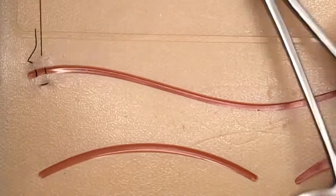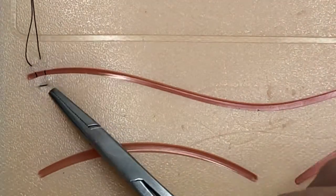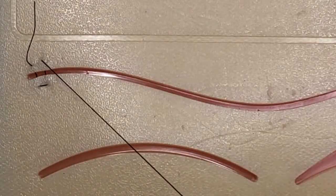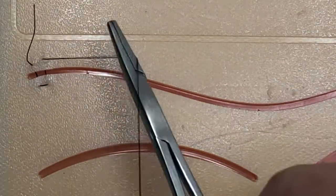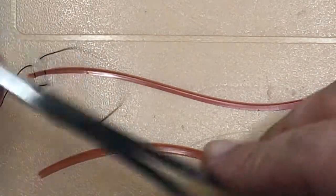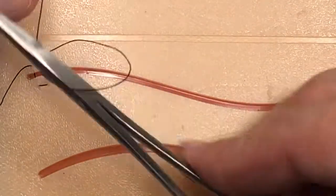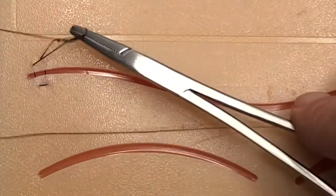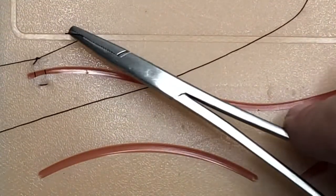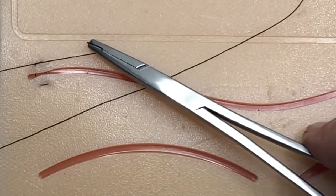So that's where we have a horizontal mattress stitch. Now these are good because you can put them in pretty quickly and they allow for good tension to be placed on the wound.